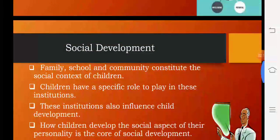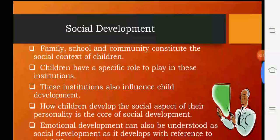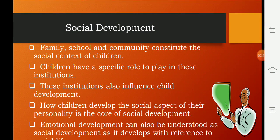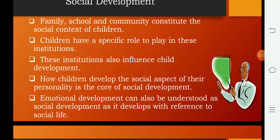Social Development. Family, school, and community constitute the social contacts of children. Children have a specific role to play in those institutions, which also influence child development. How children develop through the social aspects of their personality is the core of social development. Emotional development can also be understood as social development, as it develops with reference to social life.